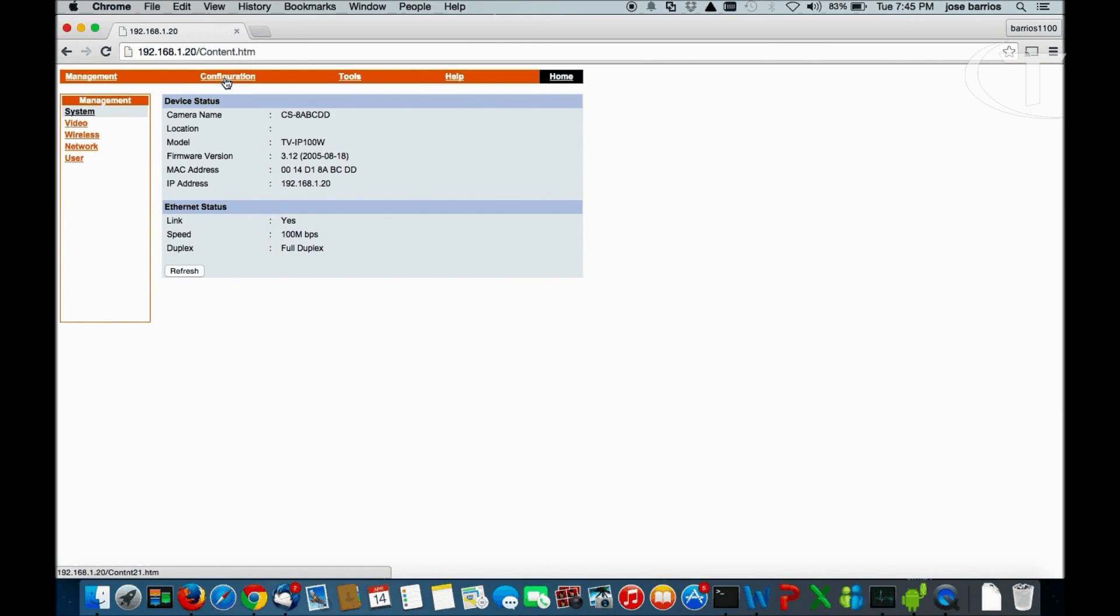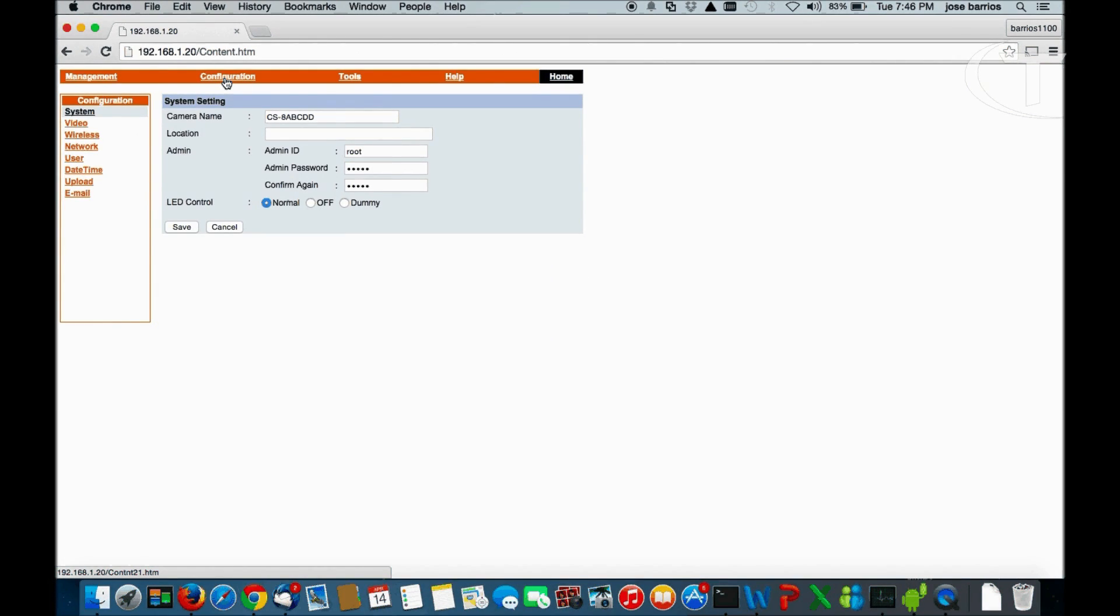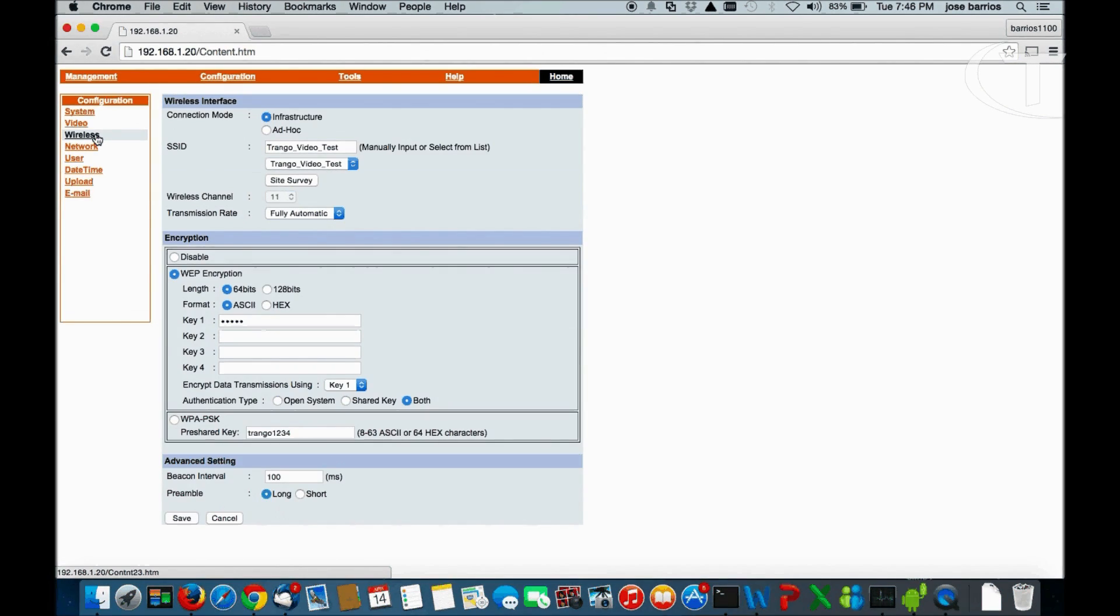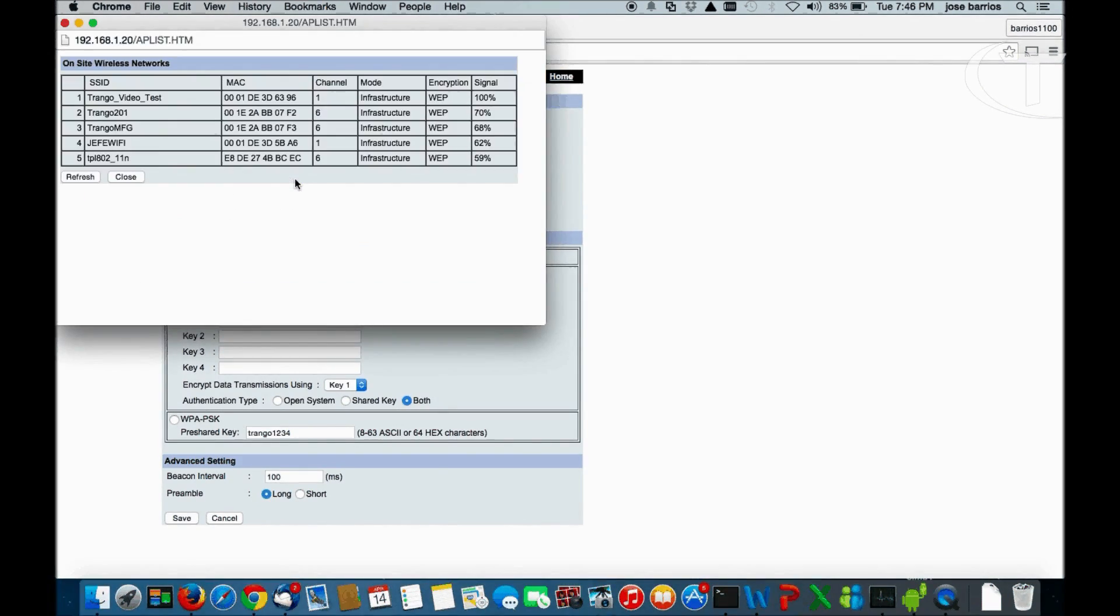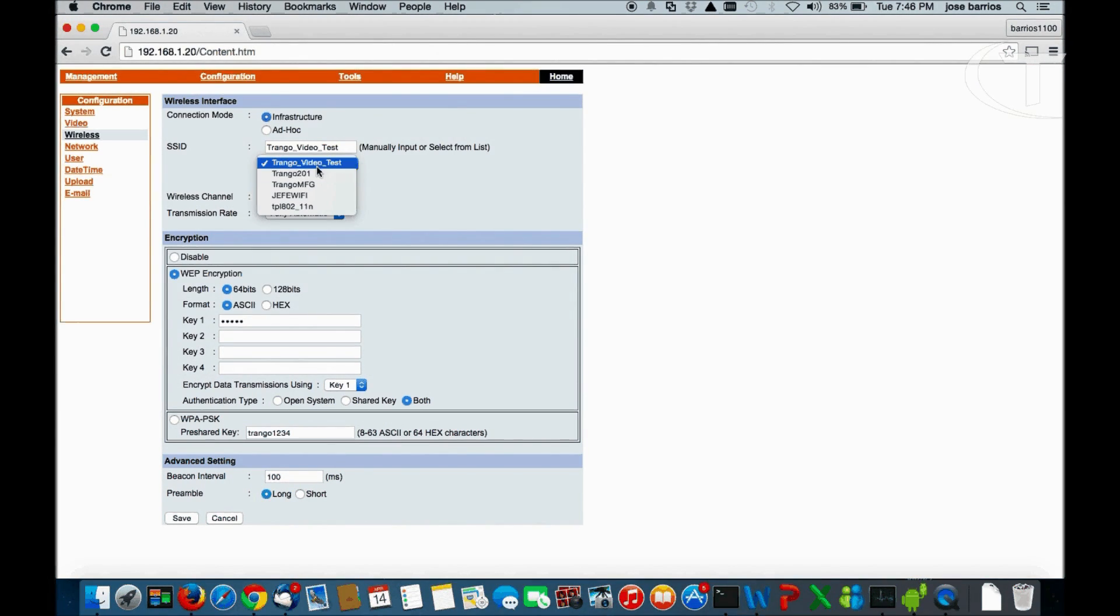So let's go into the camera. Administration, Configuration. Each camera, depending on the manufacturer, is going to be a different setup. Go to Wireless. In the wireless settings, we're going to do a site survey. It's going to show us all the available SSIDs in the area. And we can see here the triangle video test is one of the strongest ones. So that's our station site wireless access point. We're going to connect to that one. We're going to enable the WEP encryption. We're going to put in our password here. We're going to save.